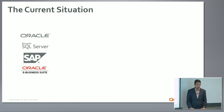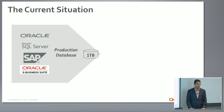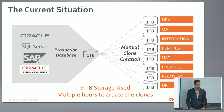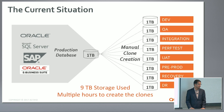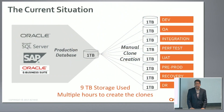If somebody has a one-terabyte database and needs ten copies for dev, QA, integration testing, performance testing, and so on, they might make ten physical copies. You might wonder why they can't use storage snapshots — but there's a tug-of-war between the storage team and the DBA. DBAs want RMAN copies, while storage guys say just take thin-provision clones. DBAs don't like that. Thin provisioning was created so storage guys could lie to DBAs. So they end up creating physical copies, or even worse, they do data subsetting.